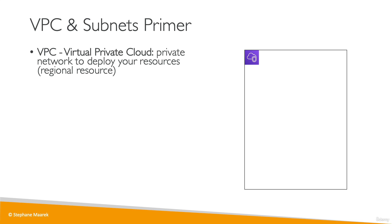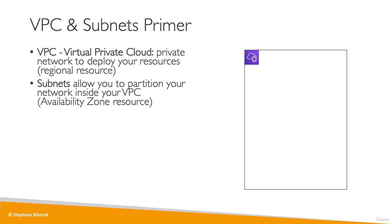Within a VPC, we can have subnets. A subnet is a partition of your network — part of the VPC — and it is going to be associated with an availability zone.